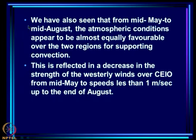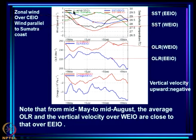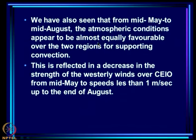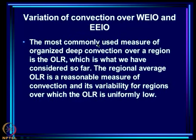From mid-May to mid-August, the atmospheric conditions appear to be almost equally favourable over the two regions for supporting convection. This implies a decrease in the strength of the westerly winds over CEIO from mid-May onwards. The westerly wind decreases rapidly as the convection probabilities in the two regions become similar — less gradient means less westerly wind — and from mid-June to about September it remains very low, lower than one meter per second, reflecting that convection over the two regions is very close.